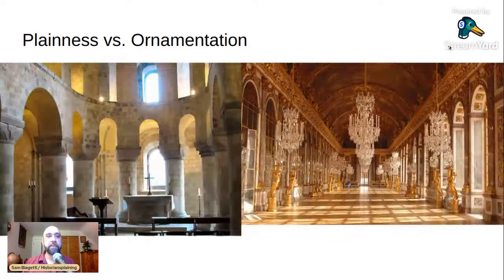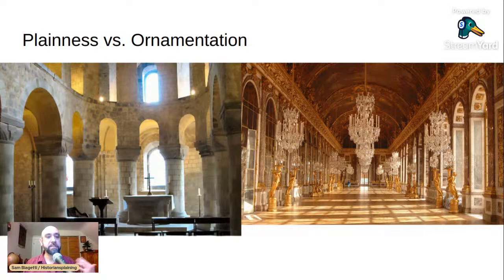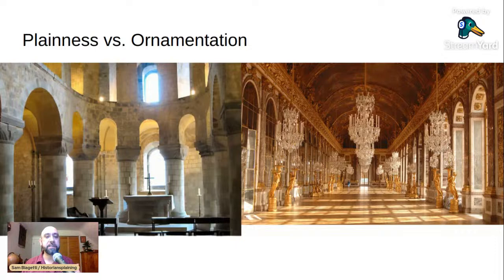Then thirdly, plainness versus ornamentation. The Romanesque chapel in the Tower of London is simple, dignified, austere, peaceful — appropriate as a place of prayer in a military building. And the Hall of Mirrors at the Palace of Versailles is a Baroque masterpiece intended to be dazzling, with rich ornamentation. Both are ways to make an impression and to inspire different emotions in the viewer — the simplicity and austerity, or the richness and complexity.